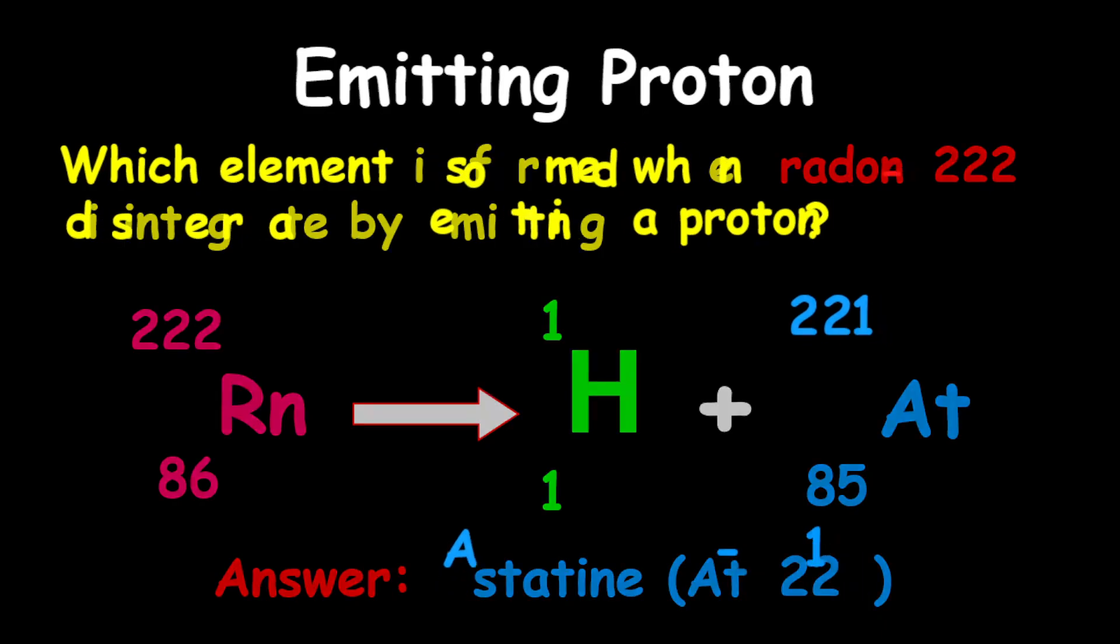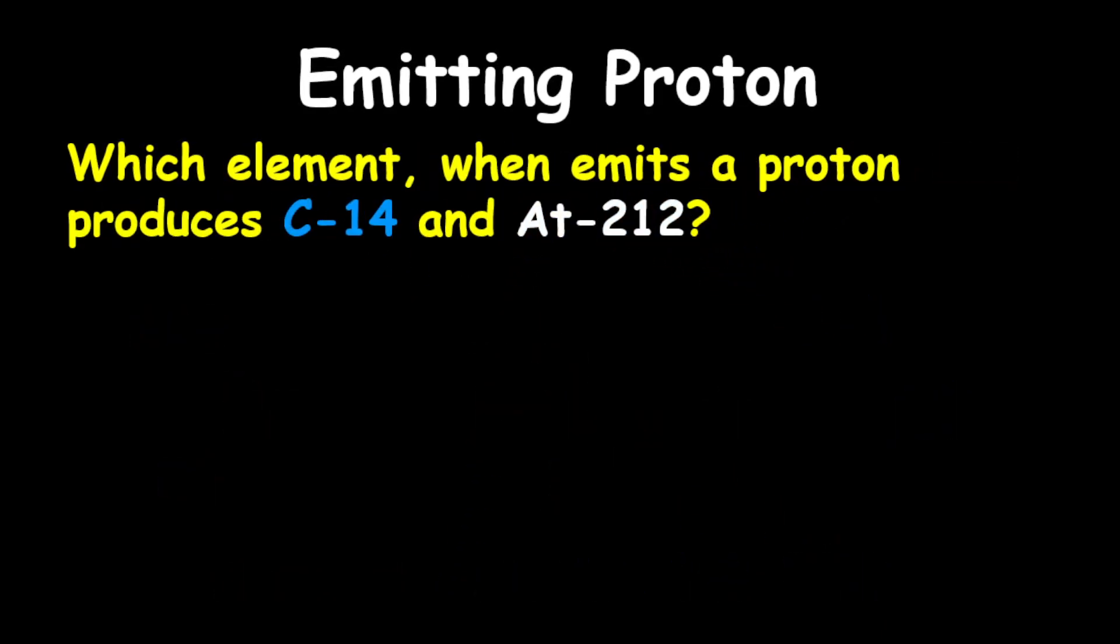Now for our next example, we are looking at the question, which element when emits a proton produces carbon-14 and astatine-212? Now astatine, carbon-14, and the proton, they are products.